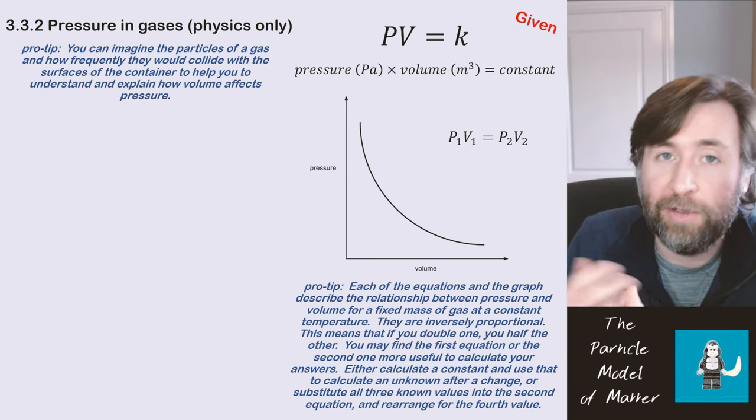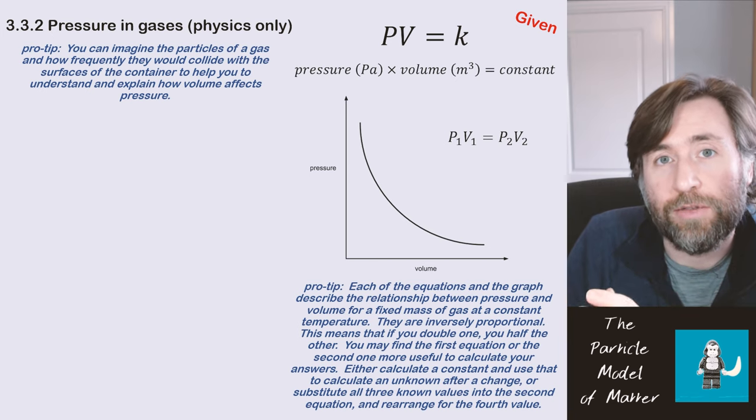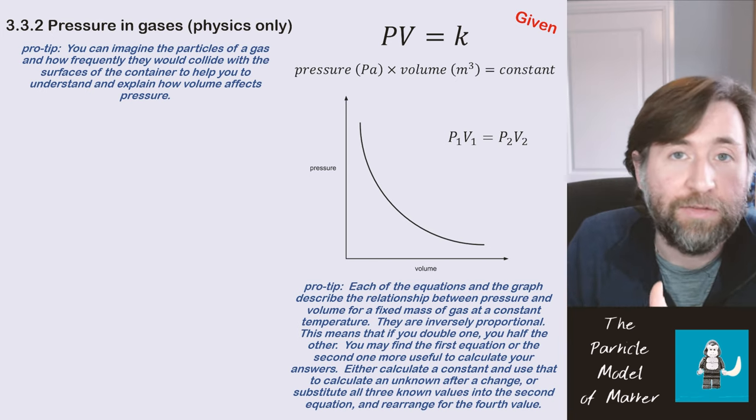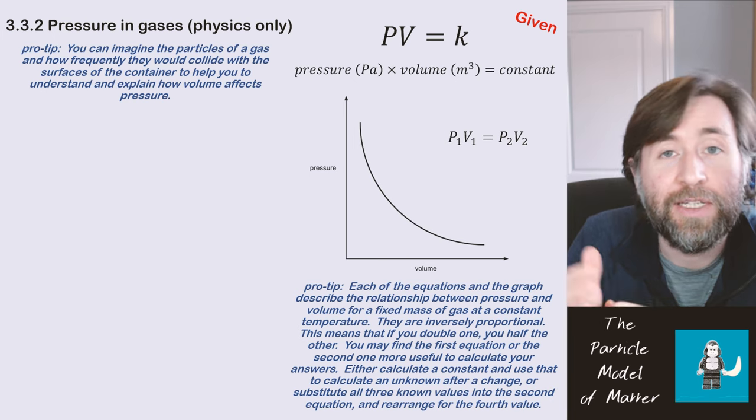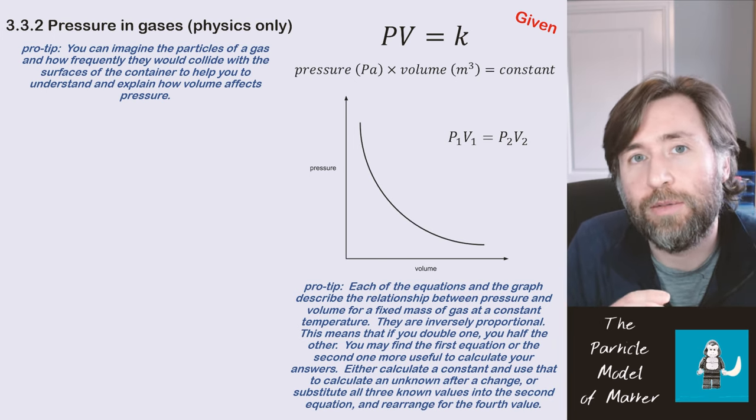So pressure times volume for a fixed mass of gas at constant temperature equals a constant. Once you make a change to that fixed mass of gas at constant temperature, it equals the same constant. So pressure times volume one equals pressure times volume two.